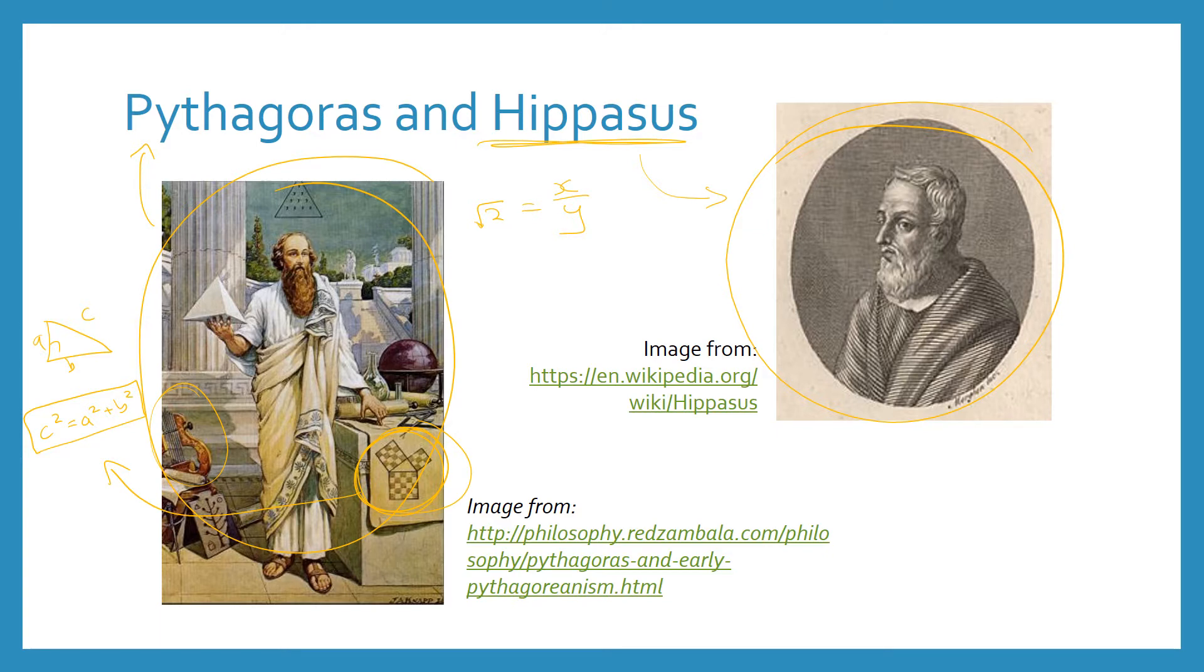So Pythagoras and his followers did not like the idea of irrational numbers. It suggested to them that the universe didn't follow maths and didn't make that much sense. And they loved how maths explained the world. But when they came to the square root of two, as we said before, this is an irrational number.